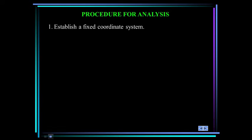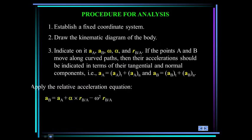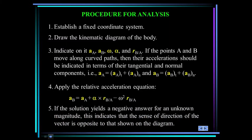Let's establish a procedure for analysis. First, establish the fixed coordinate system. Draw the kinetic diagram of the body, indicating the acceleration of A, acceleration of B, omega, alpha, and R of B with respect to A — all vectors. If points A and B move along a curved path, their accelerations should be indicated in terms of their tangential and normal components. Apply the relative acceleration equation. If the solution yields a negative answer for an unknown magnitude, this indicates the sense of the direction is opposite to that assumed.